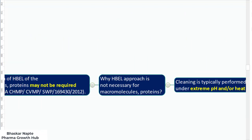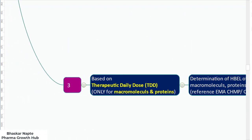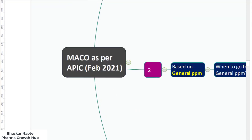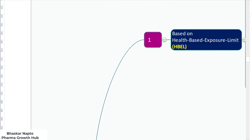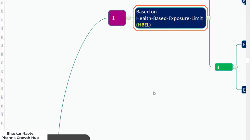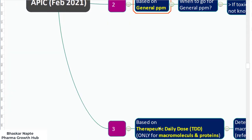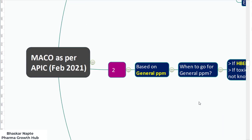We have discussed all three different ways of establishing MACO according to the APIC guideline published in February 2021. To summarize: the first approach is based on health based exposure limit; the second is based on general PPM limit; and the third is based on therapeutic daily dose, but only for macromolecules and proteins. Thank you so much.